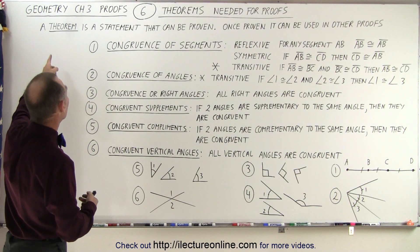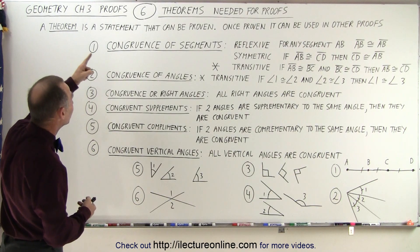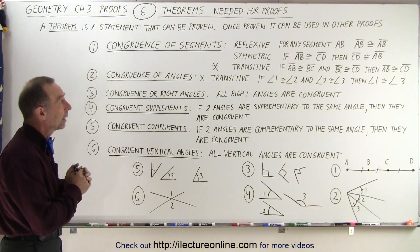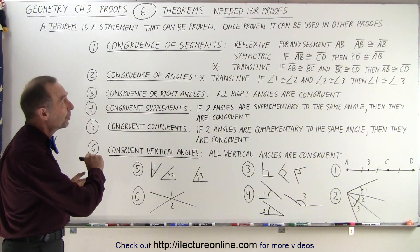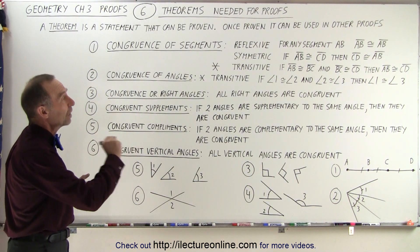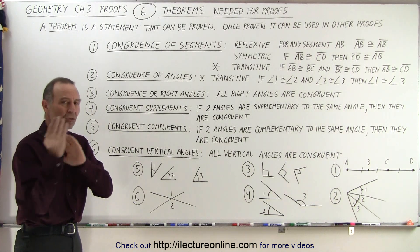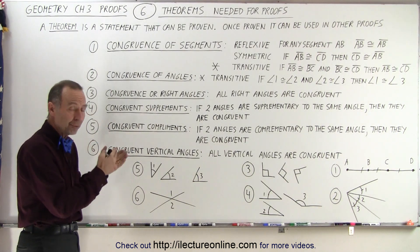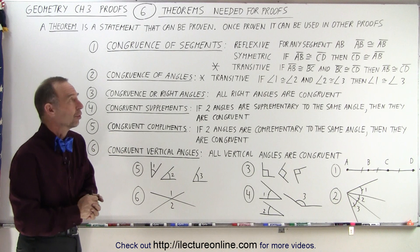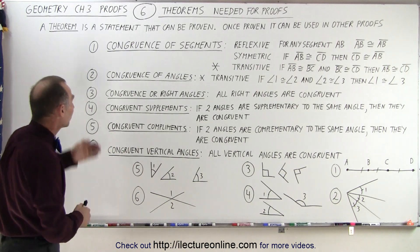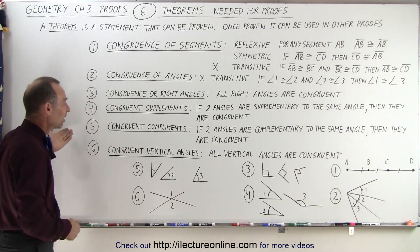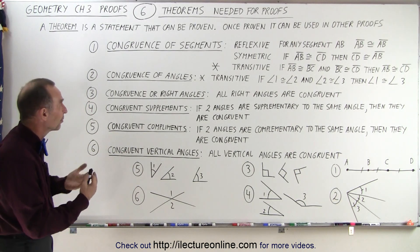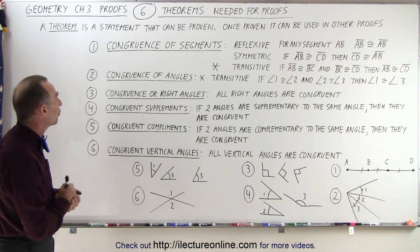What is a theorem? A theorem is a statement that can be proven. Once proven, it can be used in other proofs, and that's the key. We're just going to assume that they've been proven already, and we're just going to use them. The six that we've listed here are some of the more common theorems that we need to use.